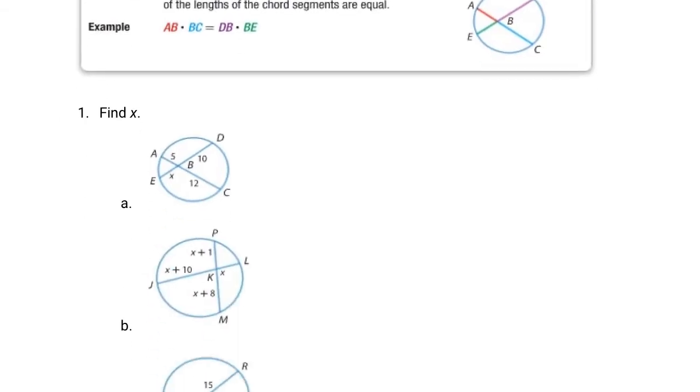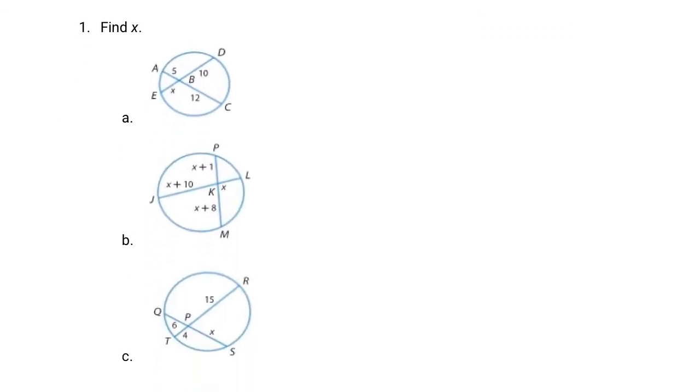So let's look at an example for exactly that. Here we've got two chords, AC and DE that intersect. So we want to find the lengths of the chords. We want to find X. We know that AB times BC is going to equal EB times BD. So let's fill in those letters with some numbers. AB is 5 and BC is 12. And that is going to equal EB is X. DB or BD is 10. 5 times 12 is 60. And 60 is going to equal 10X. We can divide both sides by 10 and get X equals 6.